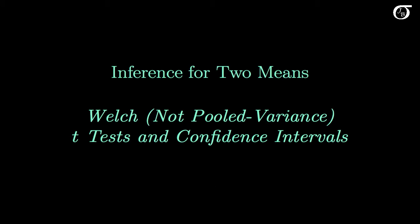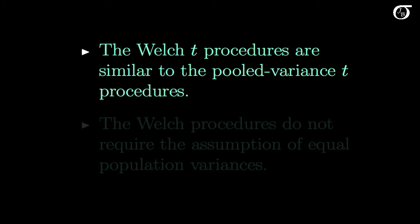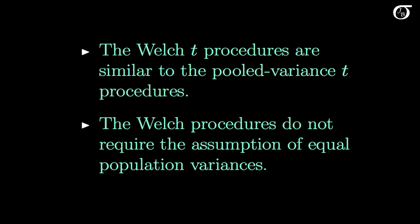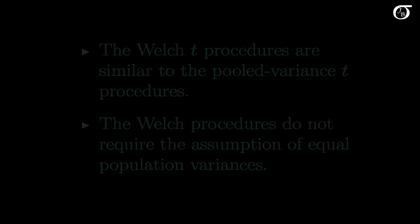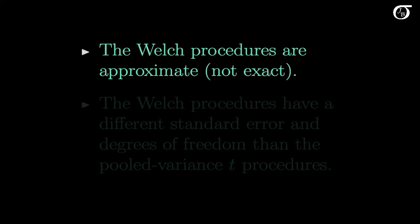Let's talk about Welch t-tests and confidence intervals. These are similar to the pooled variance t procedures, except we do not pool the variances. The Welch procedures do not require the assumption of equal population variances. They are approximate procedures, not exact, but they work very well in a lot of situations.